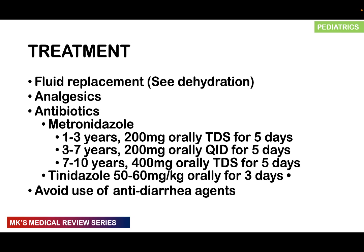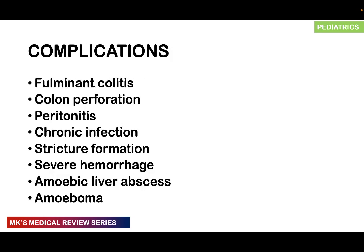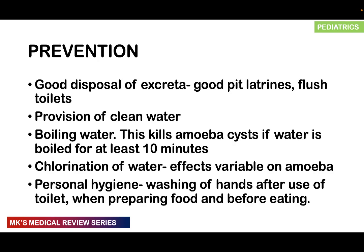Anti-diarrheal agents should generally be avoided in patients with bloody diarrhea. Complications of amoebic dysentery include fulminant colitis, colonic perforations, peritonitis, chronic infections, stricture formations, severe hemorrhage, amoebic liver abscess, and even an amoeboma. Prevention includes good disposal of excreta — such as pit latrines and flush toilets — and providing clean water.